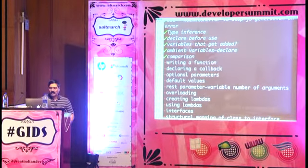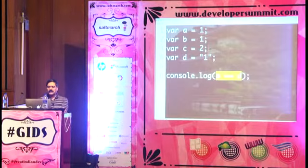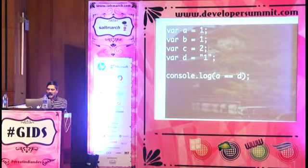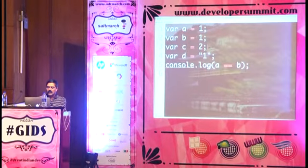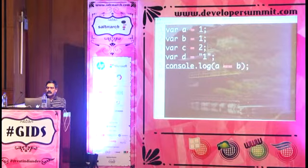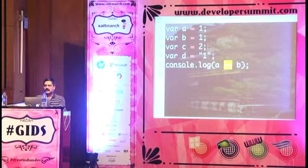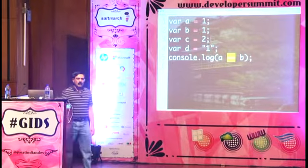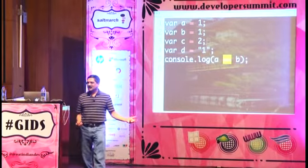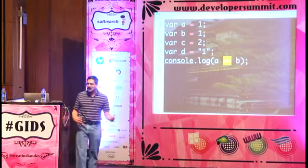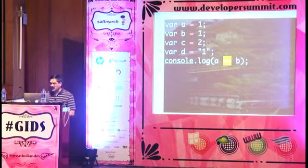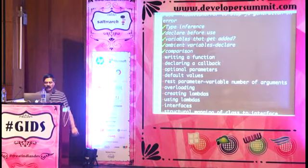One thing to note: if you look at the underlying generated JavaScript, TypeScript still uses double equals rather than triple equals. The justification is that the type verification has already been done at compile time, so it doesn't matter at the JavaScript level — though I would have preferred them to use triple equals, which is the correct way to write JavaScript.